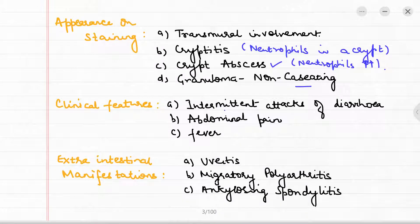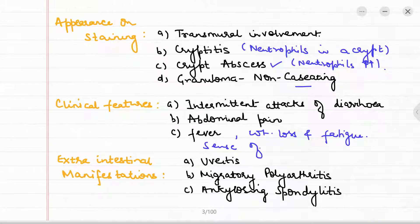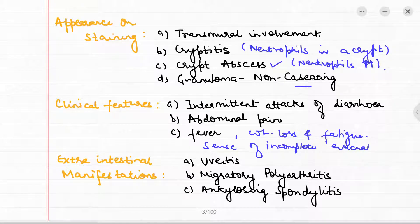Moving on to the clinical features of Crohn's disease, we see intermittent attacks of diarrhea, abdominal pain, and fever. There is also weight loss, fatigue, and a sense of incomplete evacuation.